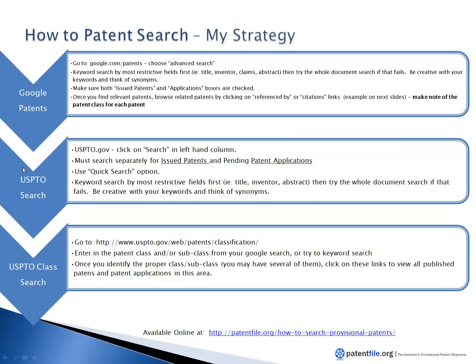My personal patent search strategy looks like this. I'm not a professional patent searcher — there are people whose entire career is searching patents and patent literature, and what they do is far more advanced. I try to put together a quick, free way to search patents. I usually start by going to Google Patents at google.com/patents, click on the advanced search tab, and start by searching the most restrictive fields first — like the title field. If I can't find what I'm looking for, I expand to the abstract field, and as a last resort I search the entire document for my keywords.